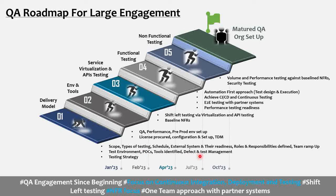Another important thing is the schedule — the program will have its own schedule, and we need to understand how the QA schedule fits into the overall program schedule. This is especially critical because large, complex programs often involve many external systems and stakeholders, and we depend on their readiness. So the schedule along with external system readiness is very important.